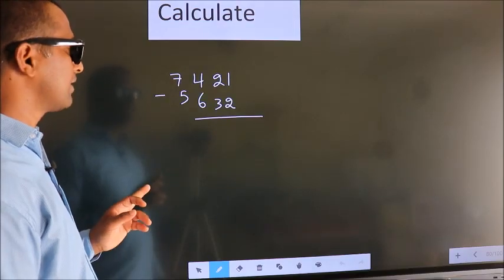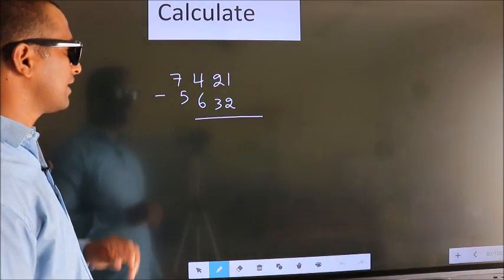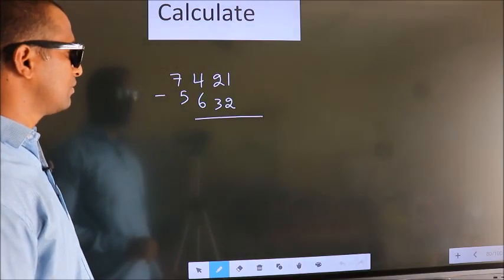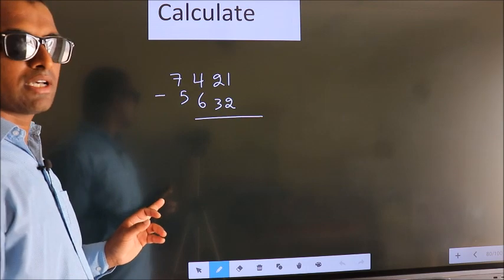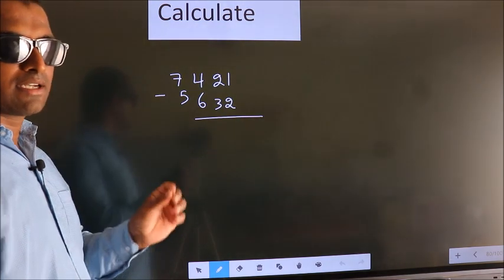Calculate 7421 minus 5632. How do we subtract faster?